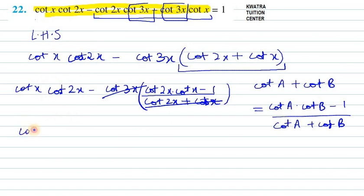So we are left with cot x dot cot 2x minus cot 2x dot cot x minus minus is plus 1. You can see that the first two terms will get cancelled out as one is positive and another is negative.